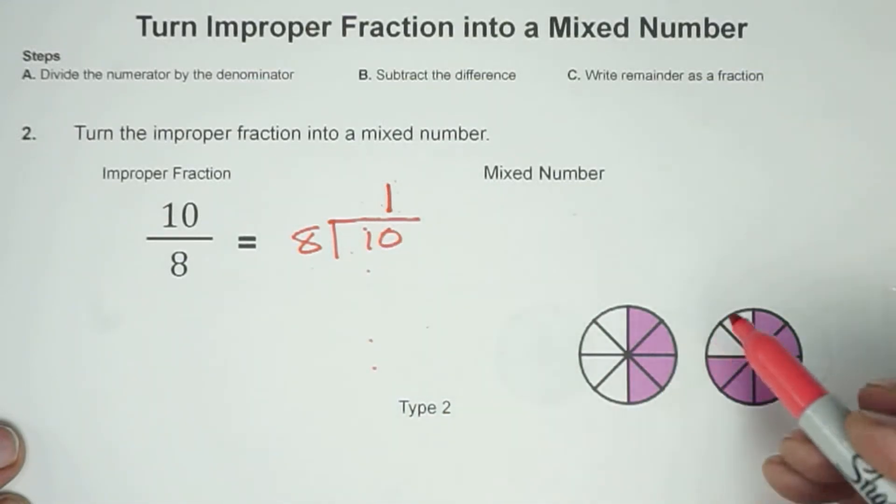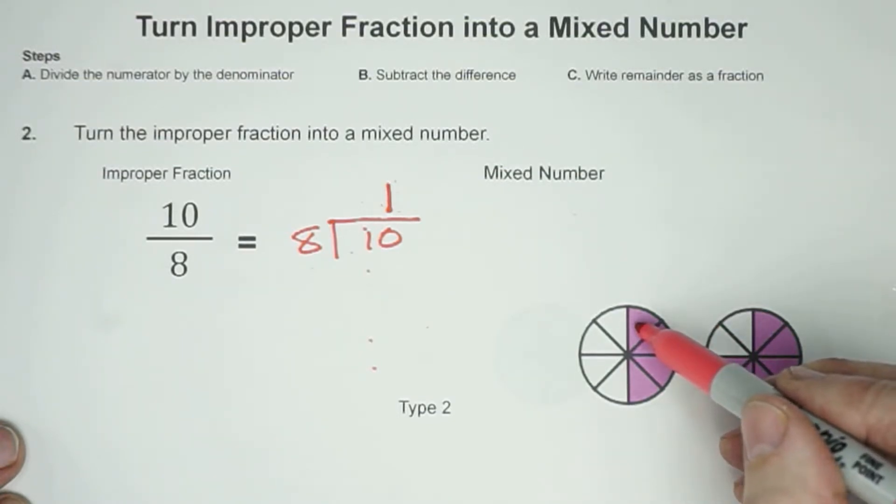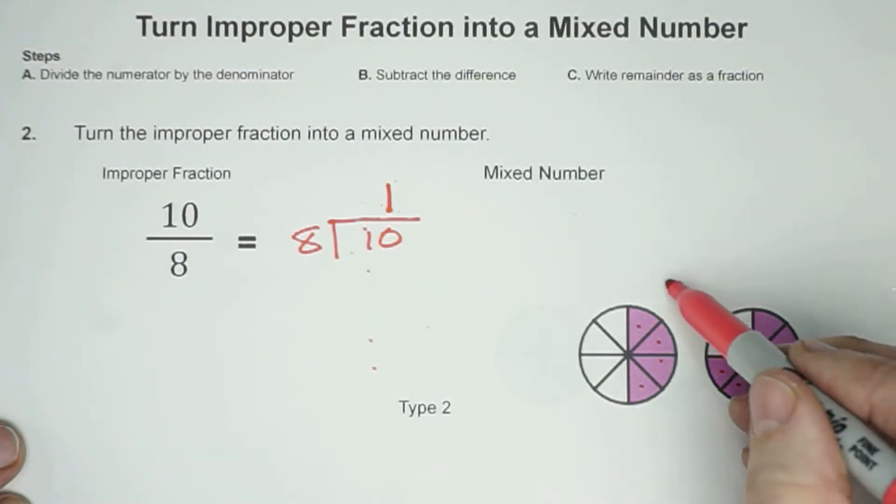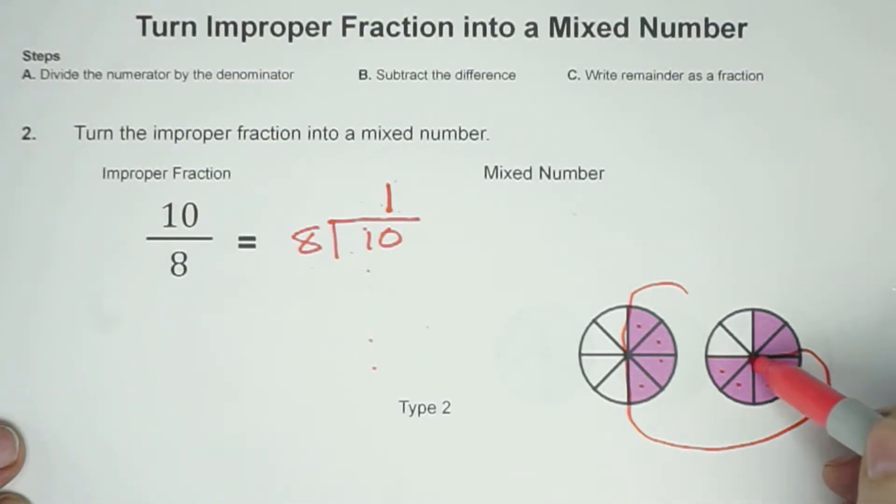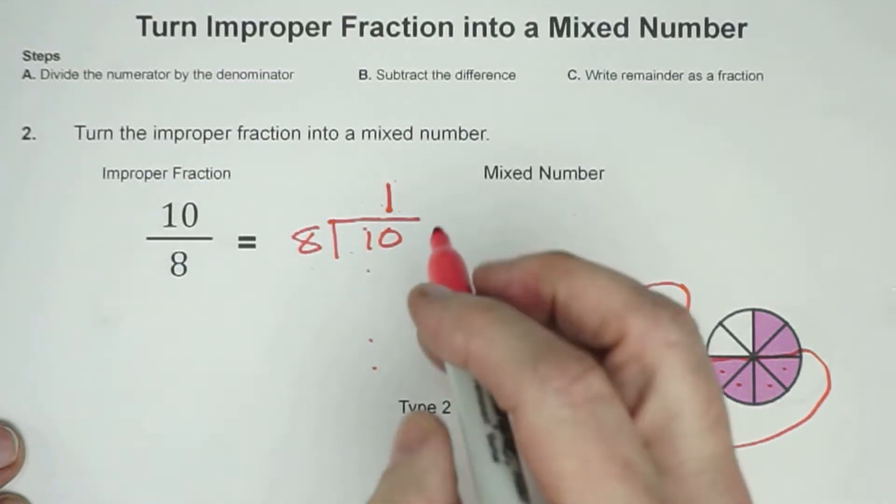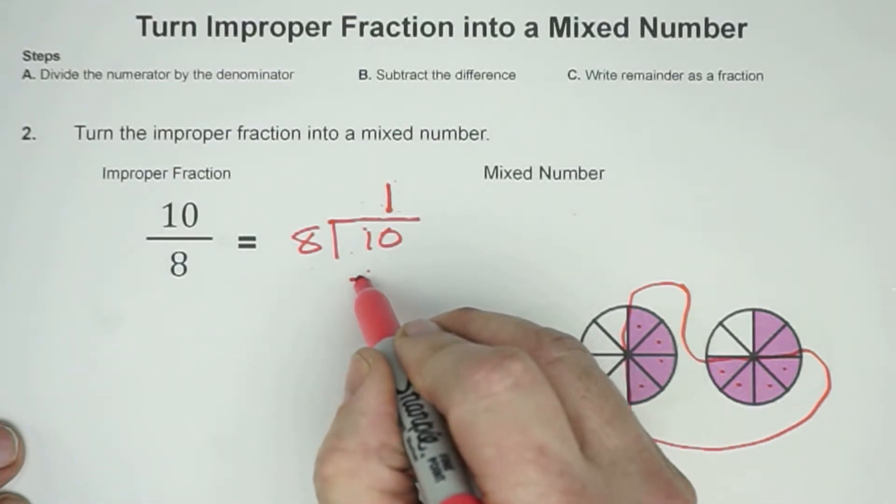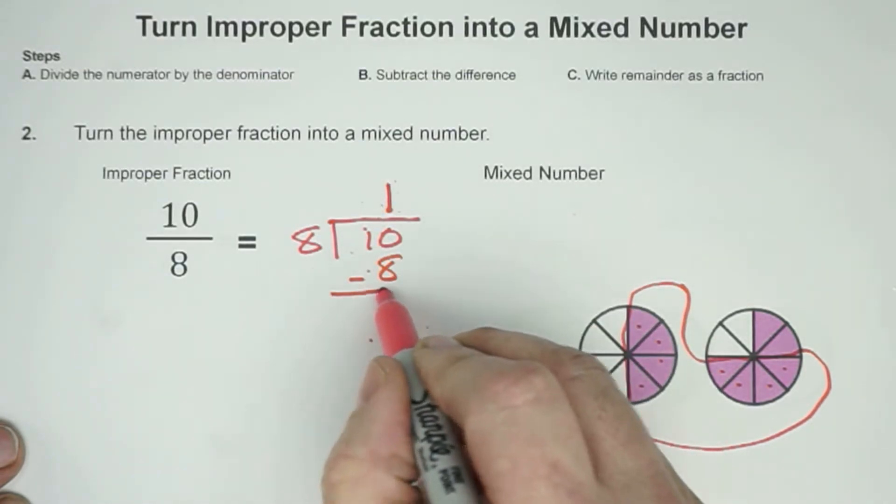8 will go into 10 one time. And this is, I call it type 2, because we don't have one whole. We just have a combination of two fractions together. And if I were looking for a group of 8, I could say that I have 1, 2, 3, 4, 5, 6, 7, 8. So that really could be my group. So that's where I'm getting my group of 8.